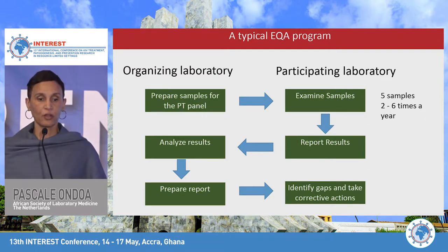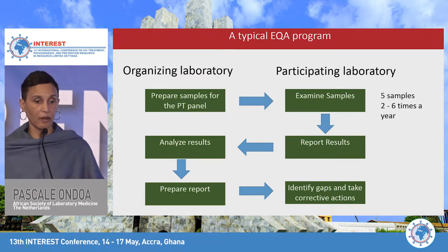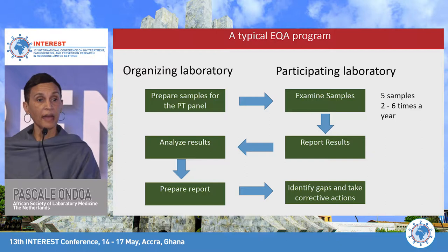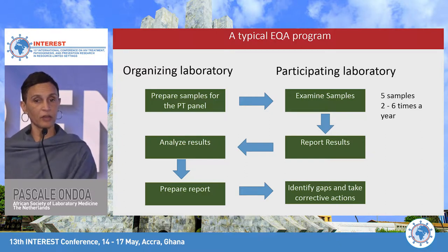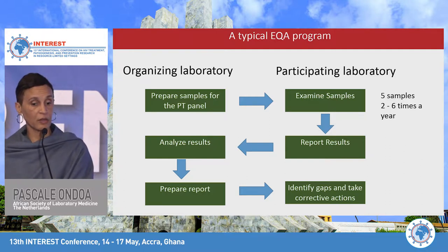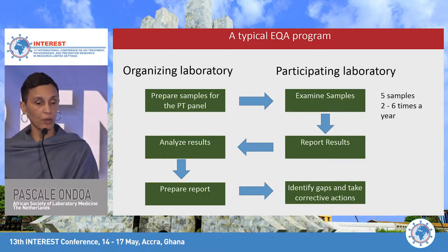A typical EQA program works as follows: there is an organizing laboratory that prepares samples for proficiency testing and distributes that panel to participating laboratories. The participating labs examine the samples — typically five samples, two to six times a year — and report the results.